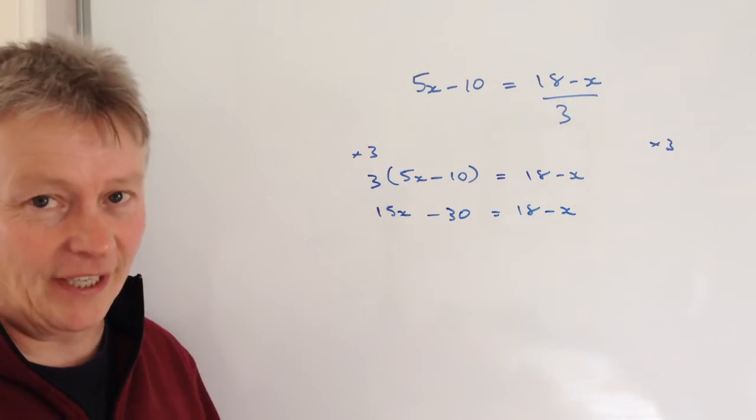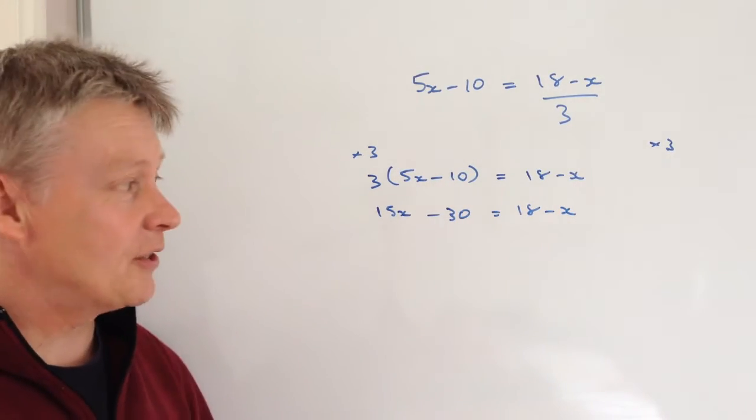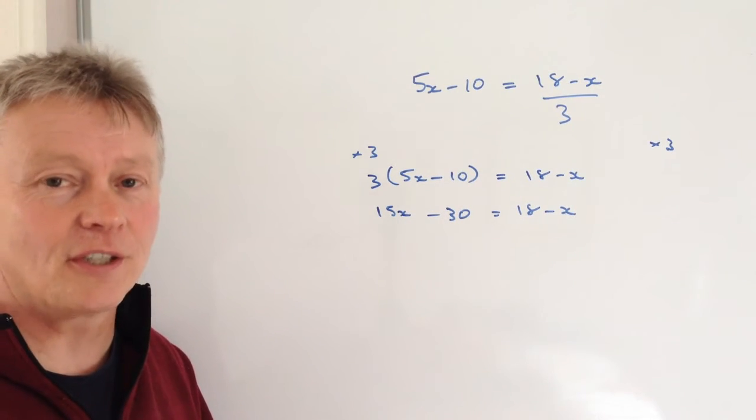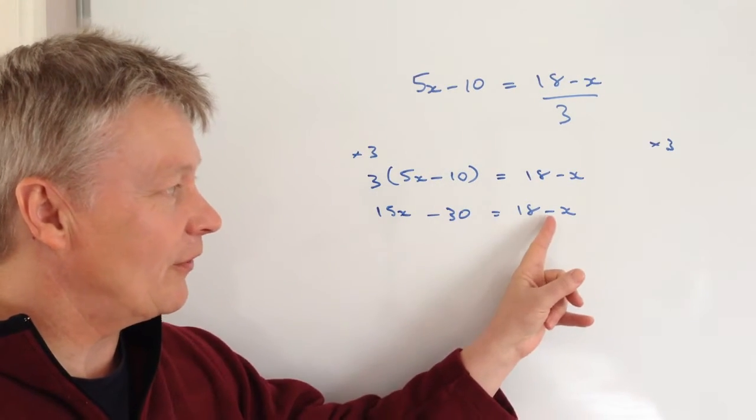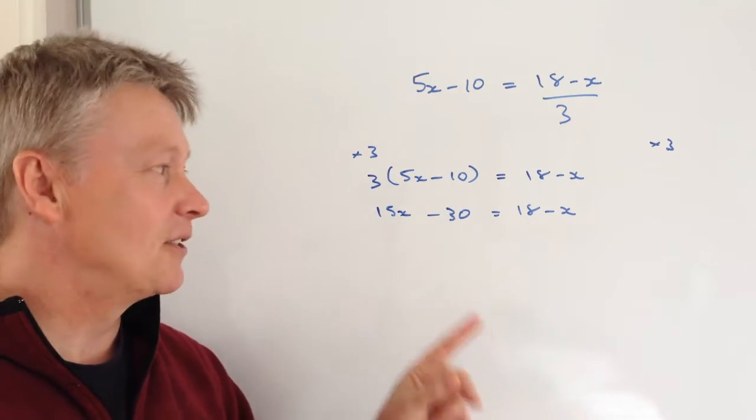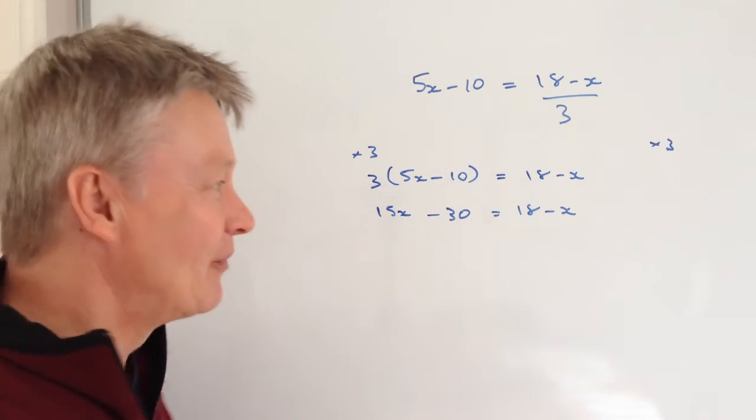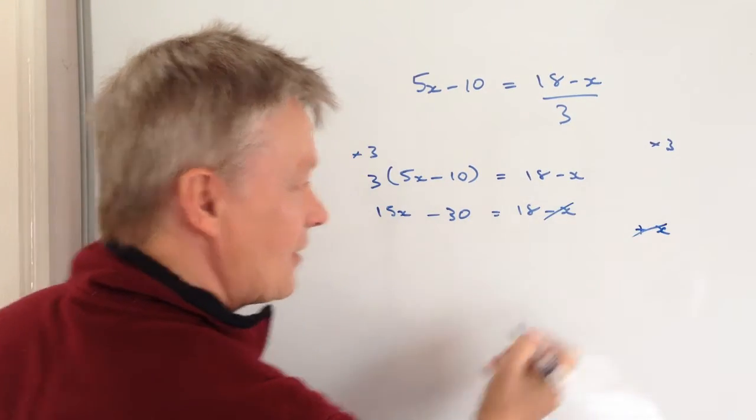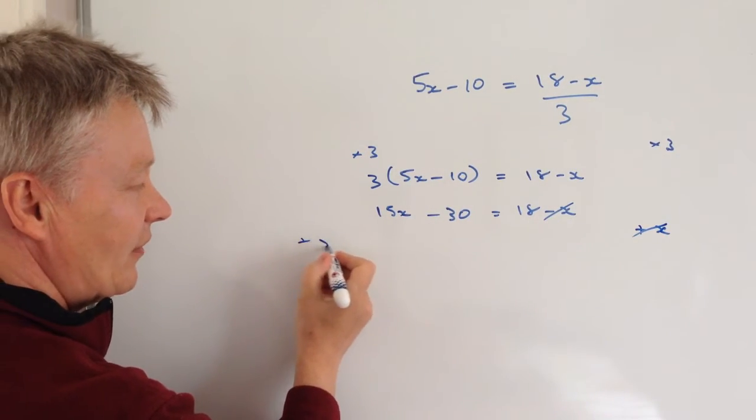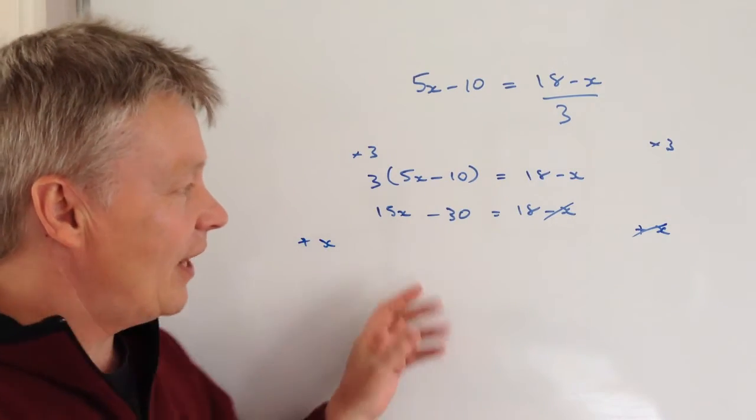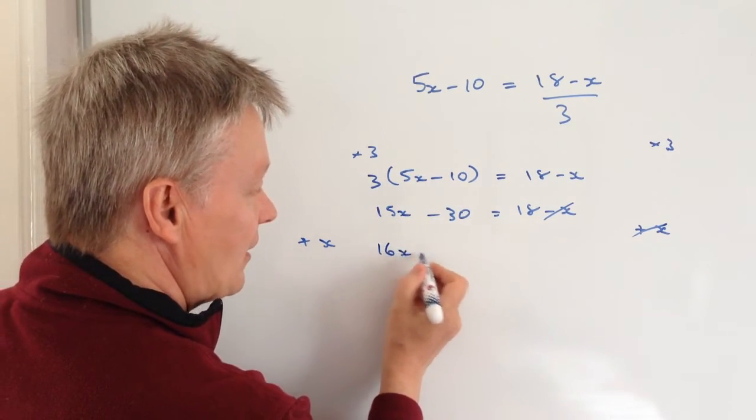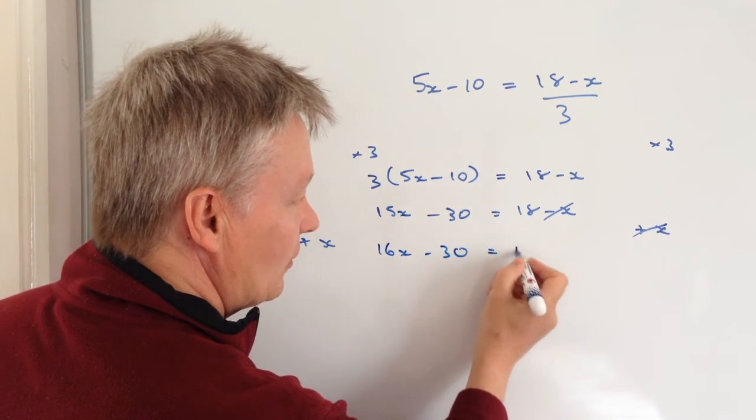So it's looking a little bit easier now, and really the challenge is to get the values of x on one side of the equation and the numbers on the other. So the first thing I'm going to do, I've got this minus x, don't like minuses, need to get rid of them, so I'm going to add x to that side, and again that will cancel itself out, but I need to do it to this side as well. Therefore on the left-hand side I end up with 16x minus 30 equals 18.